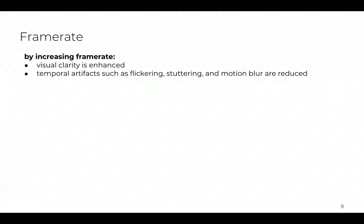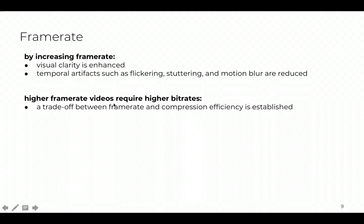Bitrate ladders are usually optimized over spatial resolution and bitrate. But we know that by increasing temporal resolution or frame rate, visual clarity is enhanced, and temporal artifacts such as flickering, stuttering, and motion blur are reduced. On the other hand, higher frame rate videos require higher bitrates, so a trade-off between frame rate and compression efficiency is established.